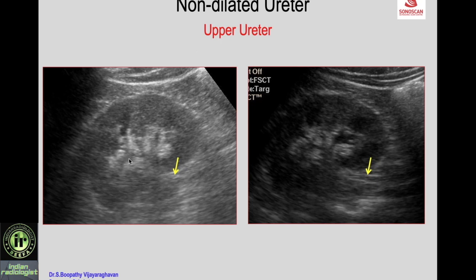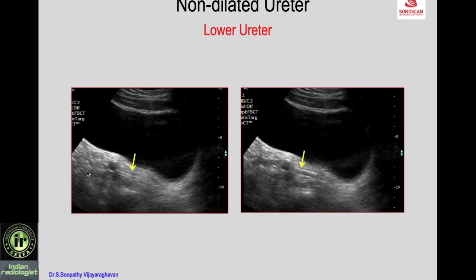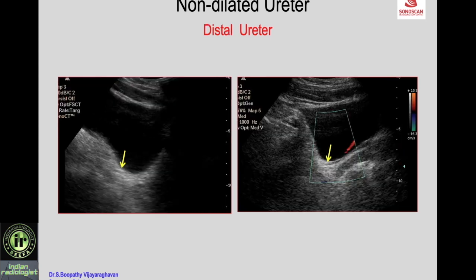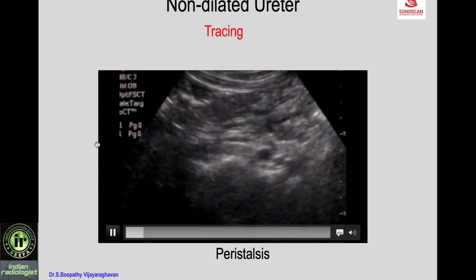You can see the calyces, the pelvis, the collapsed ureter filling up after some time — confirming it is the ureter. Similarly, the mid ureter collapses then fills up, and the lower ureter collapses then fills up. The peristalsis of filling up and collapsing confirms you are looking at the various parts of the ureter. With color Doppler you see the ureteric jet from the ureterovesical junction.